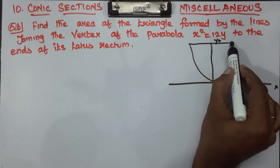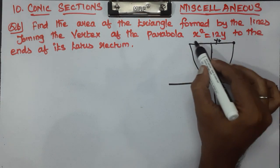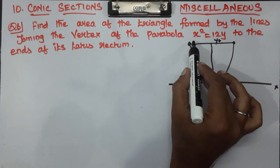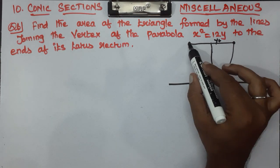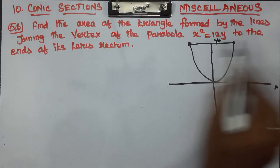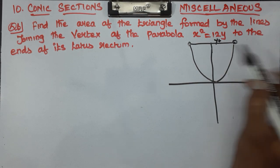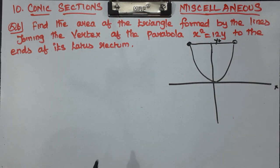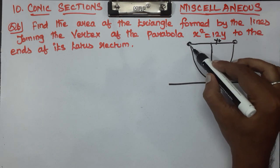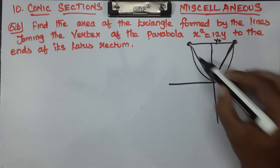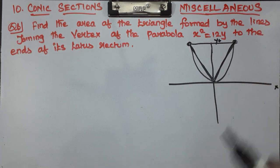This is the latus rectum. The length of the latus rectum is 2a. The endpoints are at −a and +a. How do we form a triangle now? From the ends of the latus rectum, we can form a triangle.